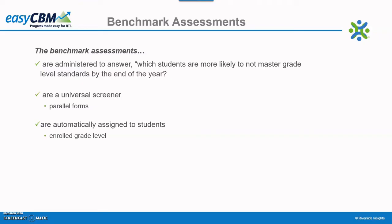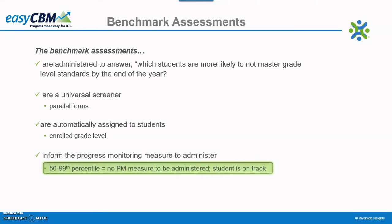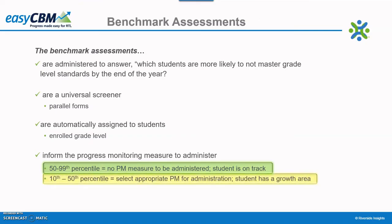The student's results on the benchmark determine if the student needs progress monitoring prior to the next benchmark administration. Students scoring in the 50th to 99th percentile on the benchmark assessment are considered on track towards meeting grade-level standards at the end of the year — they will not need progress monitoring prior to the next assessment. Students scoring in the 10th to 50th percentile likely have a skill deficit in one or more areas. Teachers will want to review the areas in which the student missed on the benchmark and select the appropriate measures for progress monitoring prior to the next benchmark.